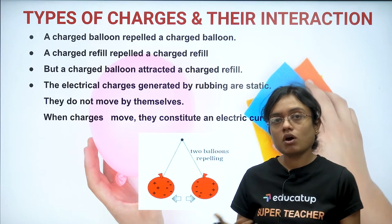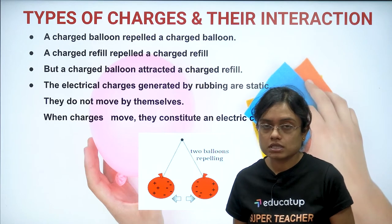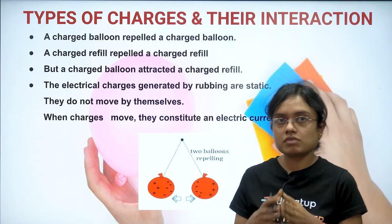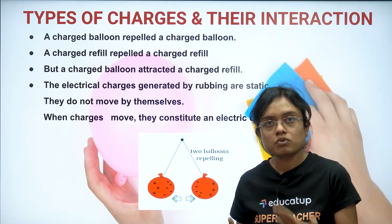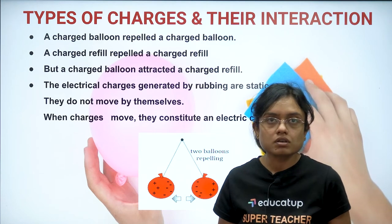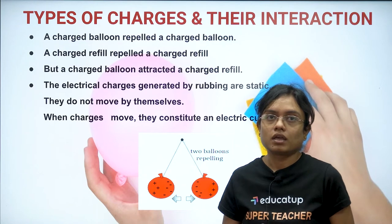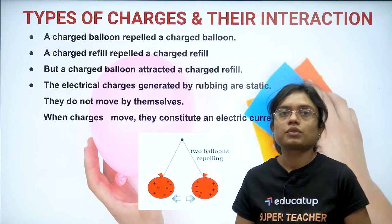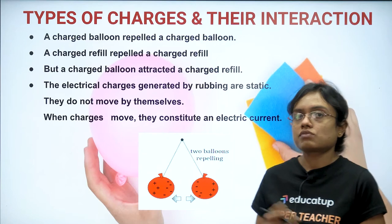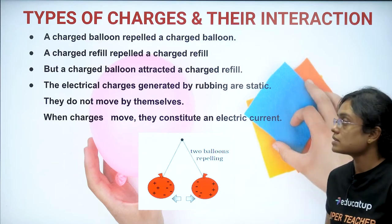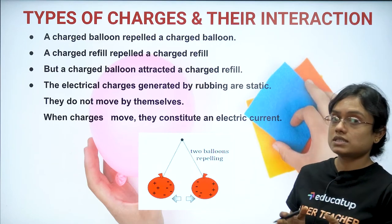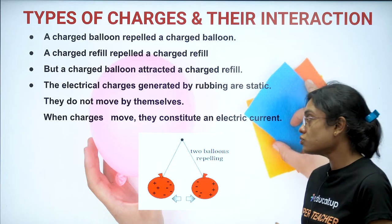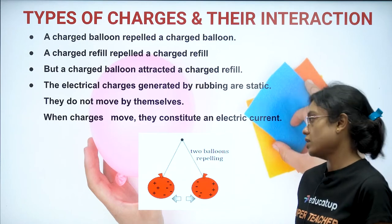Types of charges and their interaction: if both objects have the same kind of charge, they will repel each other. If they have opposite charges, they will attract each other. If one is charged and the other is uncharged, there will be no interaction. The electrical charges generated by rubbing are static — they do not move by themselves. When charges move, they constitute an electric current.